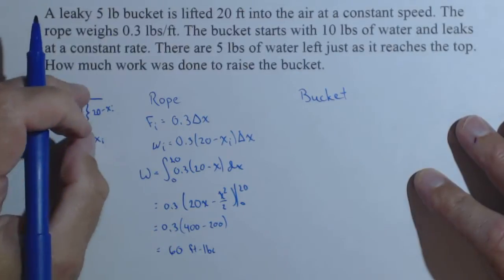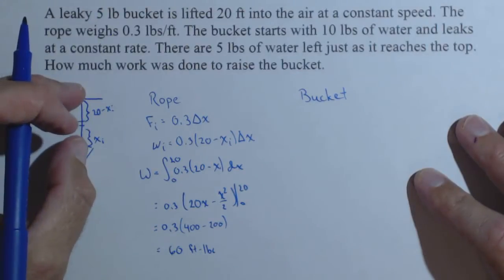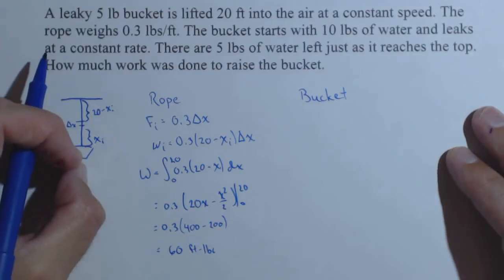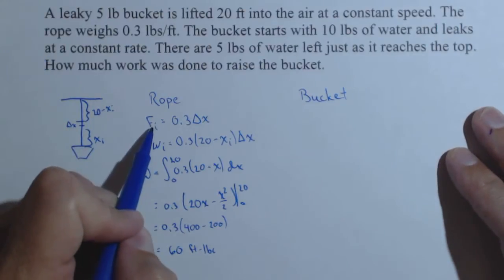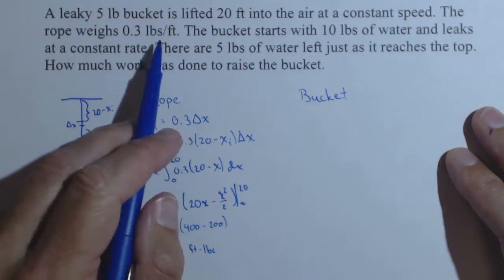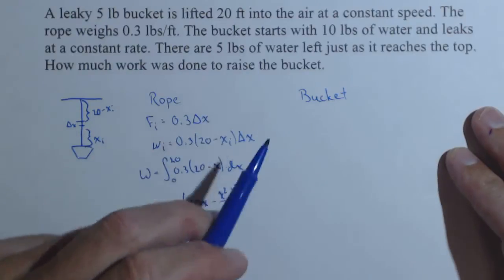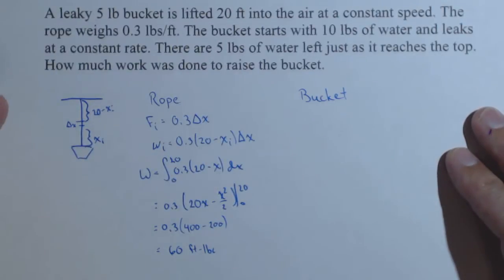So that's just getting rid of the rope. Now we're going to do the bucket separately. So again, we need the force on the ith slice. Since it's in pounds, since everything's in pounds, it's automatically a force. We don't have to multiply by gravity.